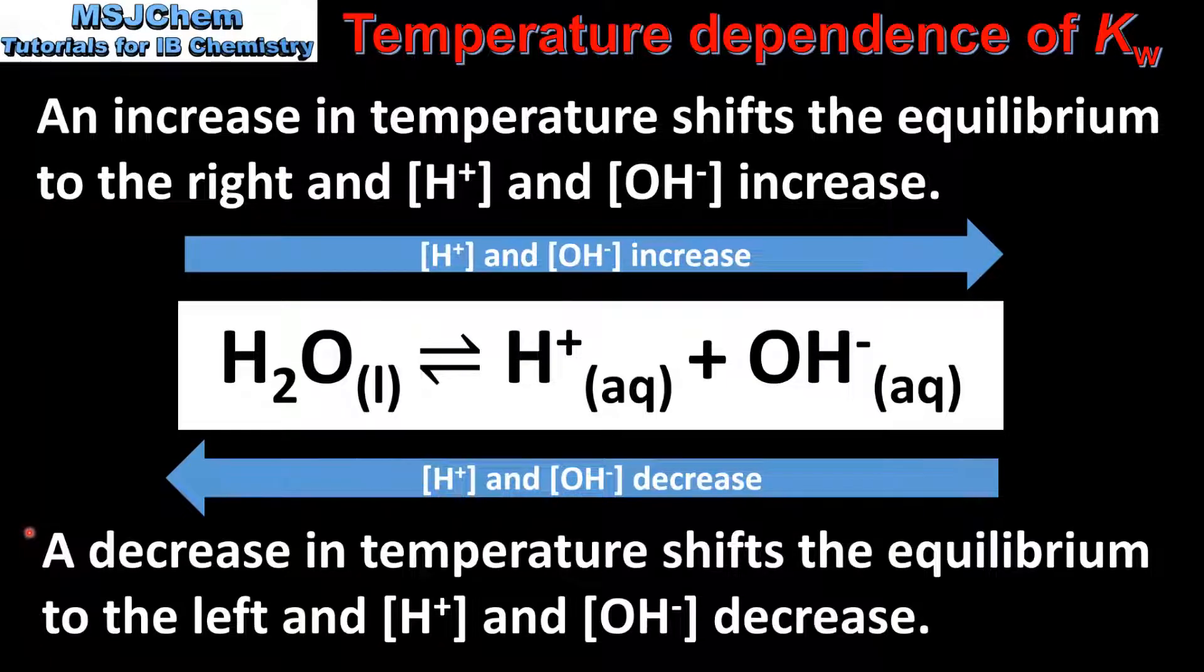And because the reverse reaction is exothermic, a decrease in temperature shifts the equilibrium to the left and the concentrations of H plus and OH negative ions decrease.